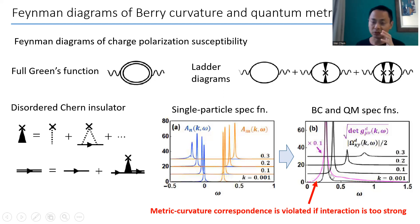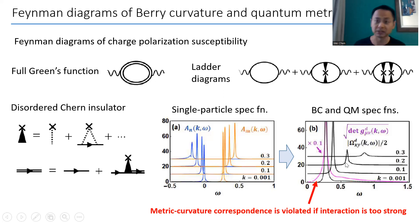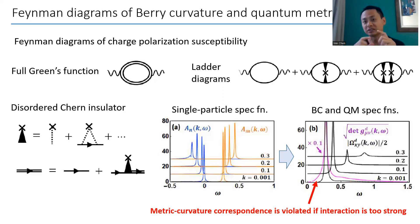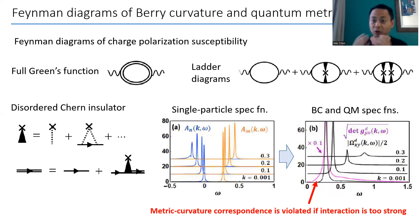In the presence of interactions, this metric-curvature correspondence is no longer valid, especially when the interaction is too strong. People are often motivated to study topological materials because topology is protected by the band gap against perturbations — that is true, but only if the interaction is weaker than some threshold. If the interaction is too strong, this protection can be violated and the topology is no longer well protected. Using this linear response theory and these Feynman diagrams, you can actually quantify how much it is violated.